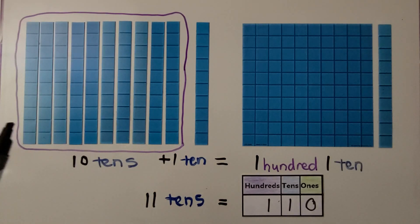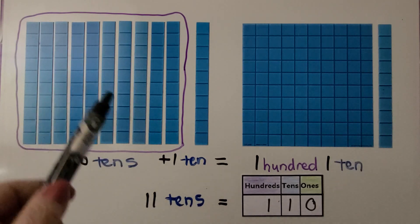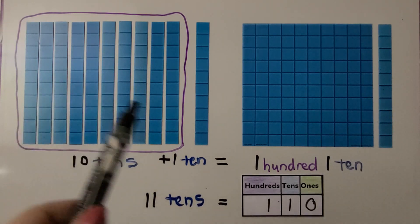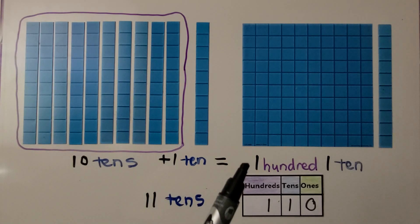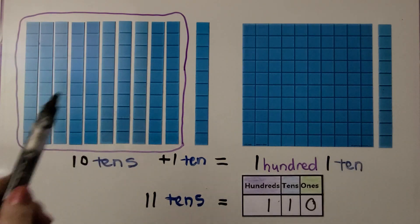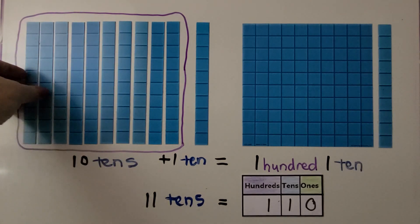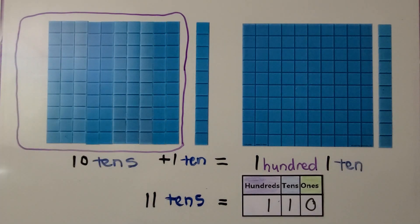Here we have eleven tens. We have ten tens circled as 100, and we have one left over — so we have ten tens and one ten, that's eleven tens. That's one hundred with one ten — it's one hundred ten. We can take this group of ten tens, and if I squeeze them together, you'll see it's the same as the one hundred.